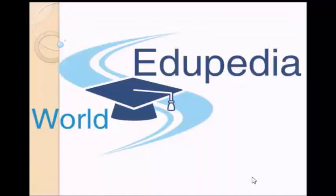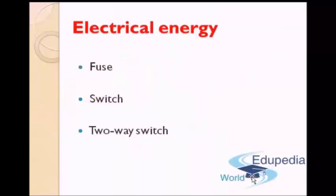Hi friends, welcome back to Euripedia World. Last lecture we saw the details about house wiring, the idea about the ring system of house wiring. Today we will dive into some of the important components that are required in house wiring. Namely, today's discussion will be focused on fuse — what a fuse is and why it is necessary — what a switch is and how it works, and finally how a two-way switch works, also known as the stairway switch.